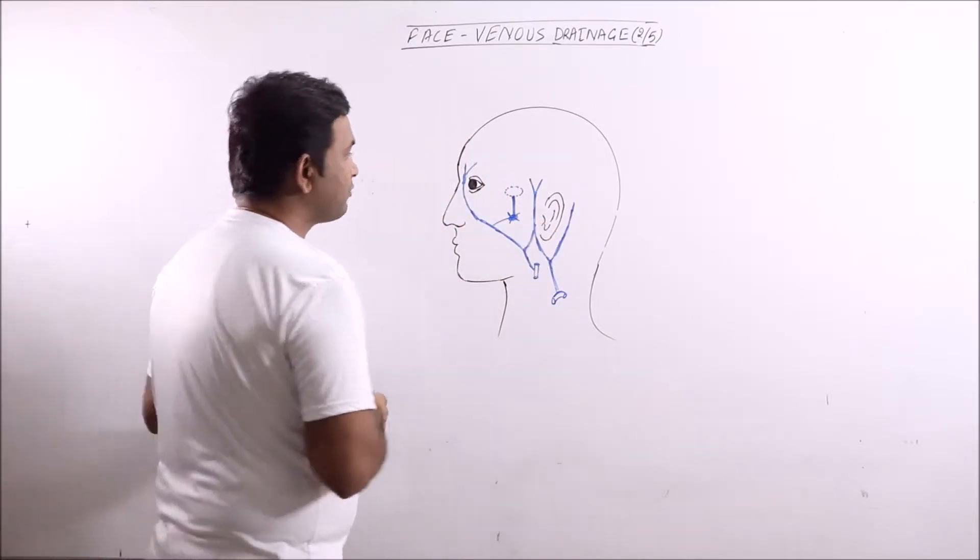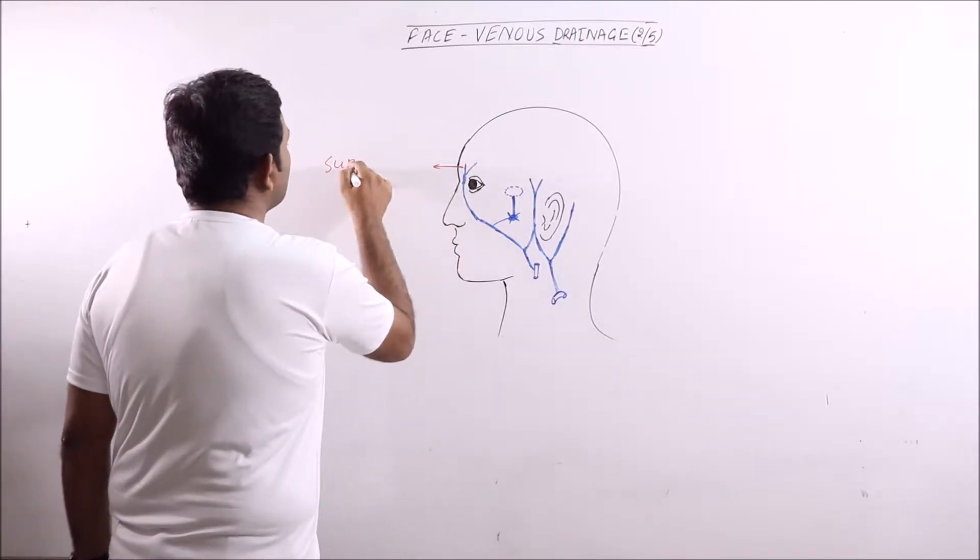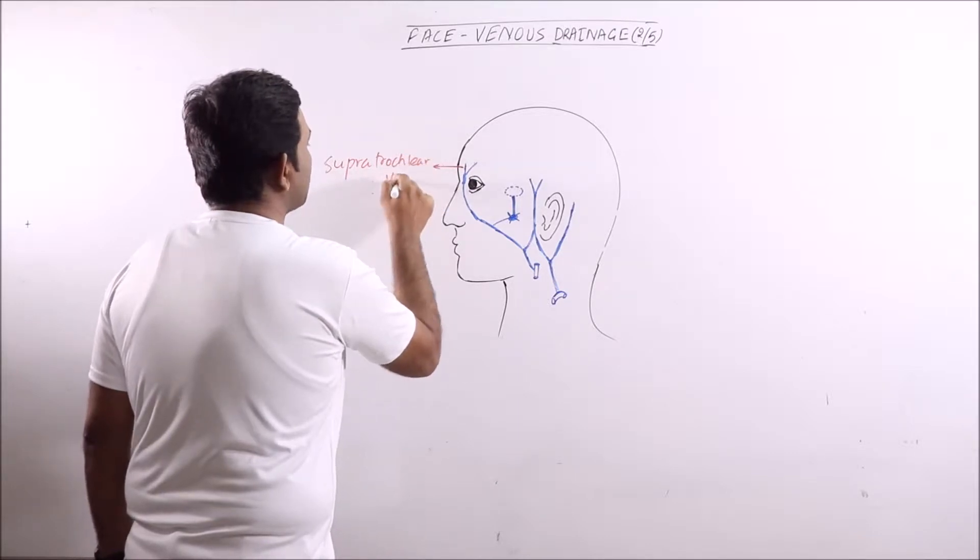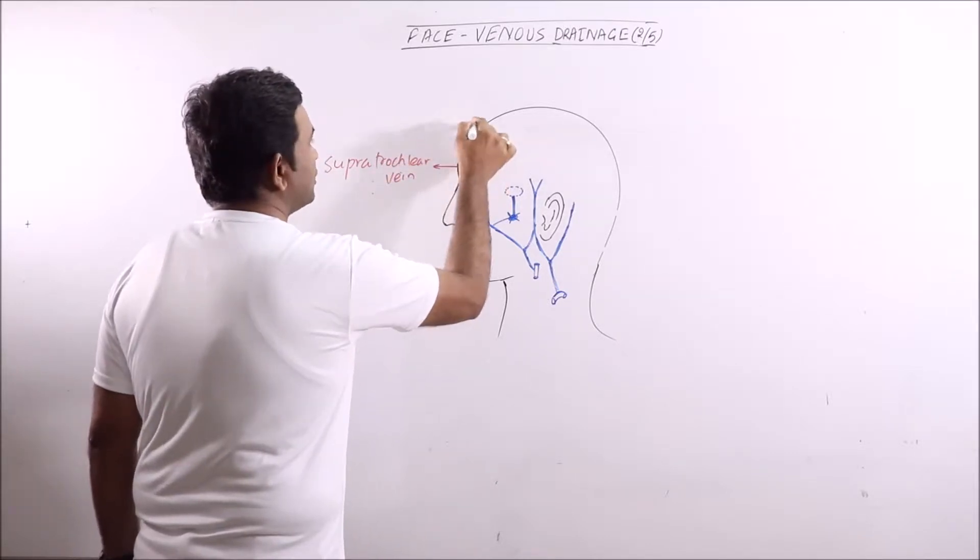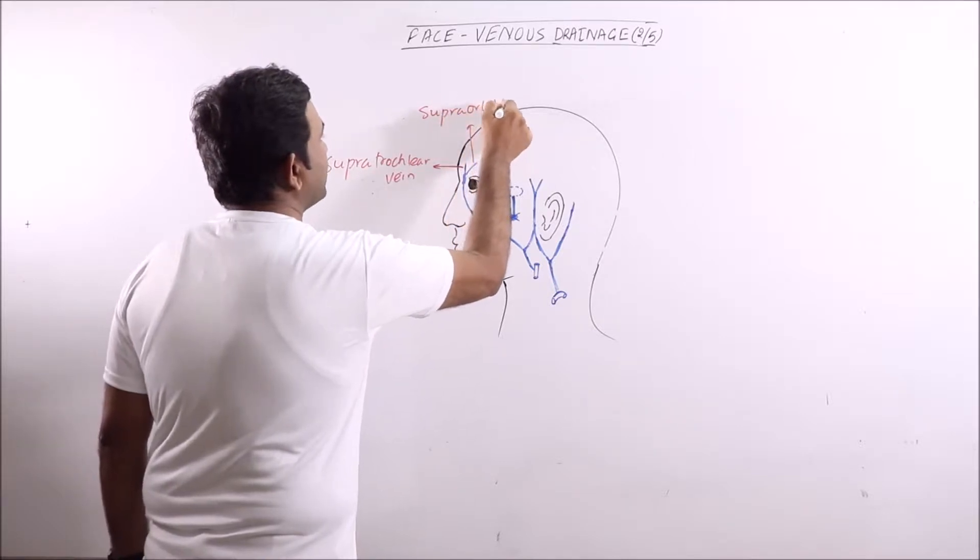Now the important veins are: this is the supratrochlear vein, this one is the supraorbital vein.